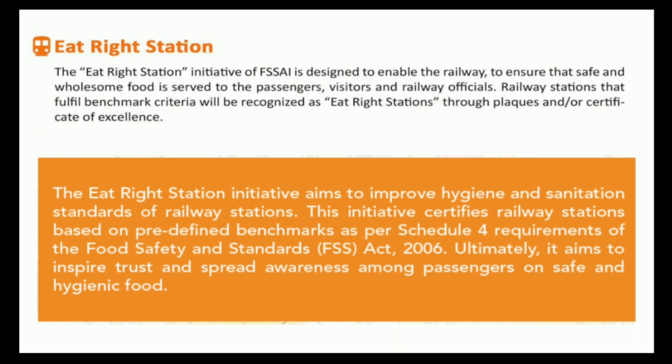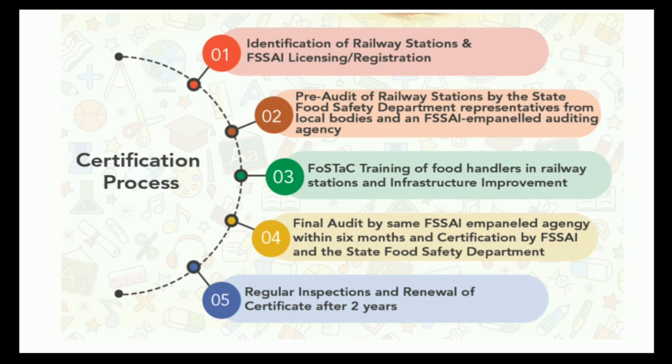Then we have Eat Right Station. We know that Indian railway stations are a major food hub — you can see a number of food stalls at railway stations. Under this scheme, FSSAI is targeting to ensure that the food provided at railway stations is safe and wholesome. FSSAI launched this particular scheme under cluster certification, following the same process: identification of railway stations, registration, pre-auditing, training on how to improve quality and safety, and then the final audit and certification.